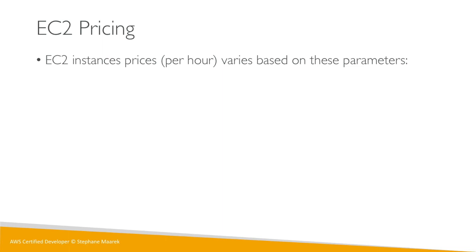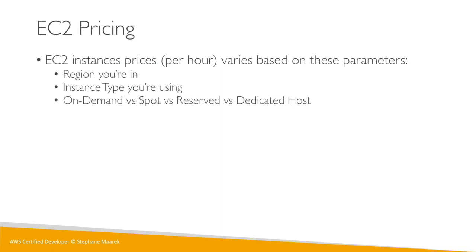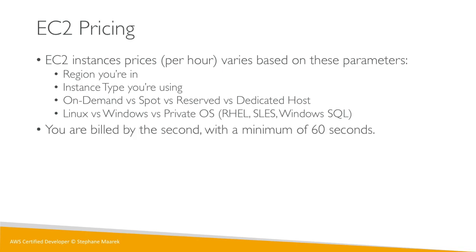First, EC2 pricing is given per hour and it varies based on: the region you're in, the instance type you're using (for example we've been using T2 micro so far), and whether it's on-demand versus spot versus reserved versus dedicated host. It also depends on the OS — Linux, Windows, or another. You are billed by the second with a minimum of 60 seconds, so if you create an instance for 30 seconds you're billed for 60 seconds, but if you run it for 90 seconds you're billed for 90 seconds.